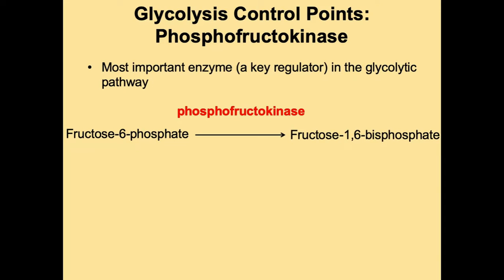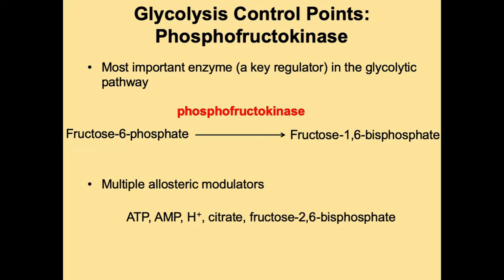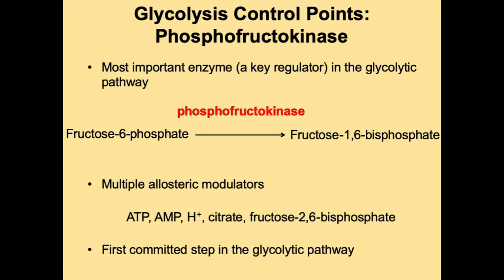Phosphofructokinase converts fructose 6-phosphate to fructose 1,6-bisphosphate and its activity is regulated by multiple allosteric modulators, including ATP, AMP, protons, citric acid, and fructose 2,6-bisphosphate. Looking at the pathway, there is a single arrow — not a two-directional arrow — making this the first committed step in glycolysis. The same enzyme does not catalyze the reverse reaction.